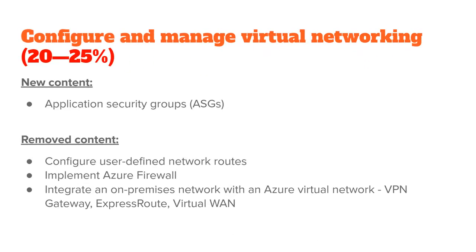The fourth section, remember, has dropped from 25–30% down to 20–25%. They've added application security groups and removed user-defined routes. They don't mention Azure Firewall anymore, and they removed an entire section around on-premises networking and hybrid networking — including VPNs, VPN gateways, ExpressRoute, and Virtual WAN. So all of the hybrid networking content has come out of this exam.